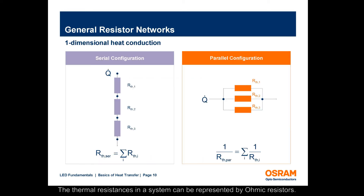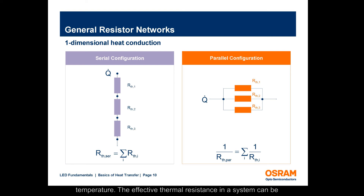The thermal resistances in a system can be represented by ohmic resistors. The resistance network is essentially a serial or parallel connection to the ambient temperature. The effective thermal resistance in a system can be calculated for a serial or parallel configuration.